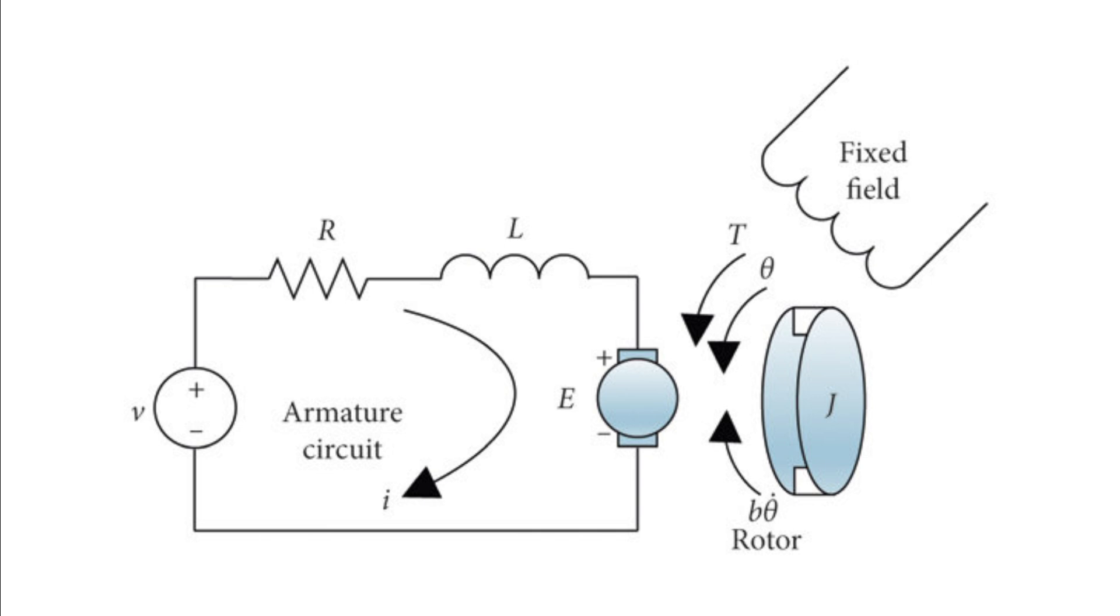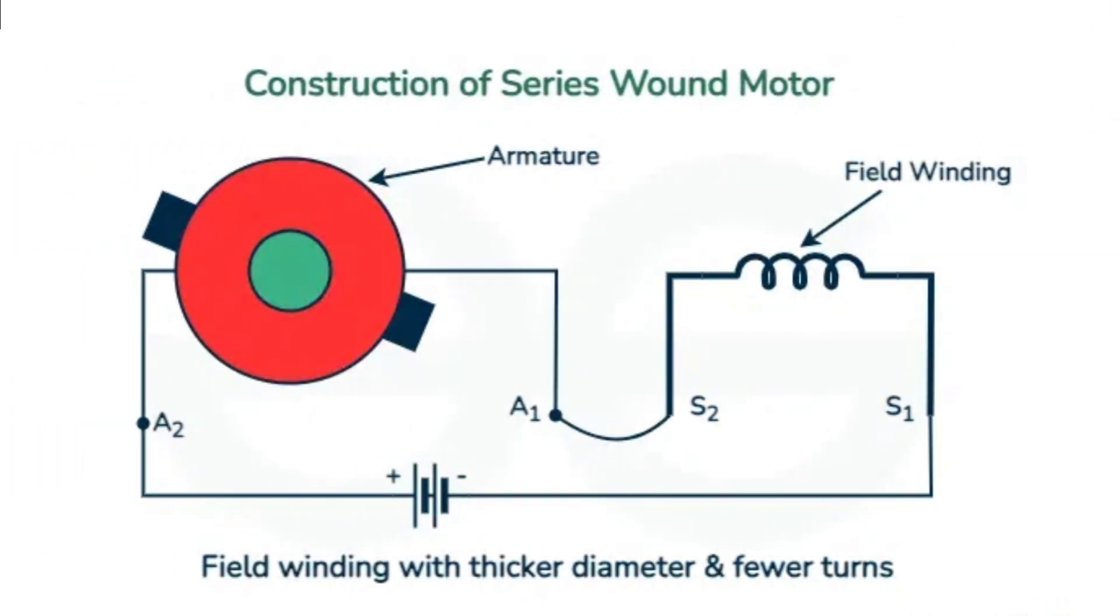A series wound DC motor has its field winding connected in series with the armature winding. This means that the current flowing through the field winding is the same as the current flowing through the armature winding.